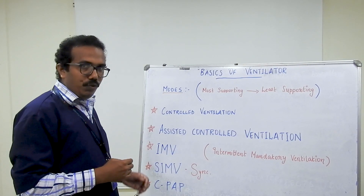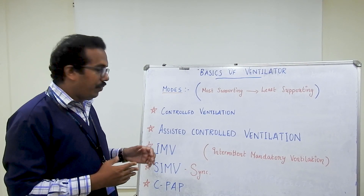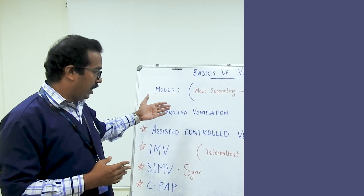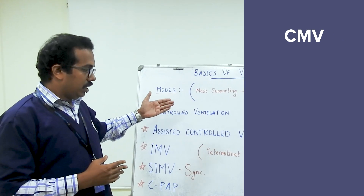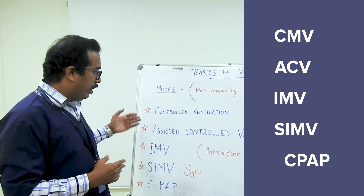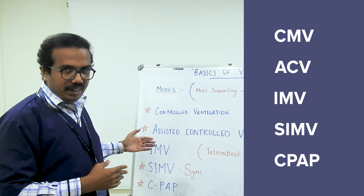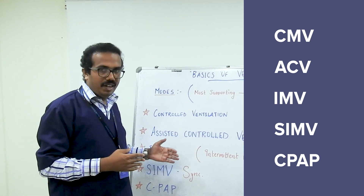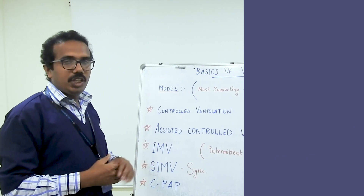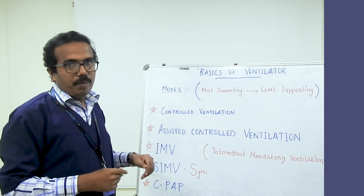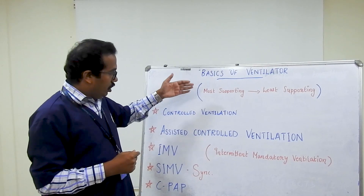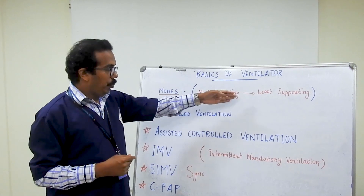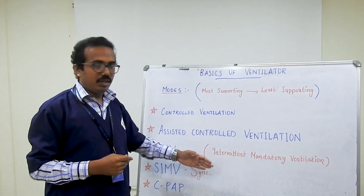Next, we will discuss the different modes used in a ventilator: controlled ventilation, assisted controlled ventilation, intermittent mandatory ventilation, synchronized intermittent mandatory ventilation, and continuous positive airway pressure. These are arranged from the most supportive to the least supportive mode.